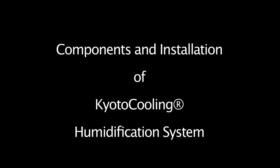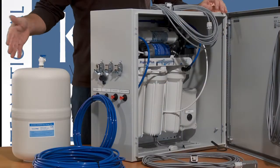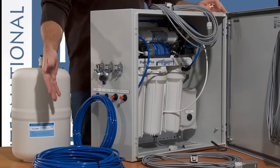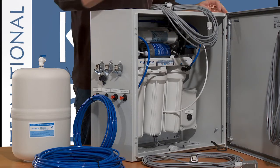This video will give an explanation of the components and the installation of the Kyoto cooling humidification system. Each unit is supplied with the buffer tank, the flexible water hoses, the electrical cables, and the reverse osmosis unit.